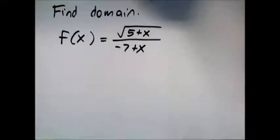Here we're going to look at domain where maybe there's more than one issue with the domain. Remember universally there's only two things that can't happen with real numbers. You can't take the square root of a negative number and you can't divide by 0.